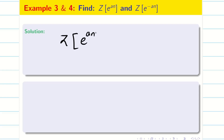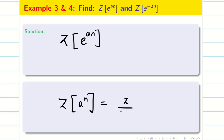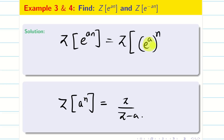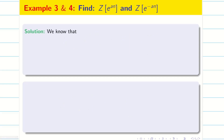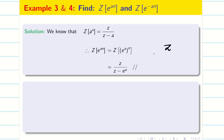Next problem: find Z of e^(an). We know the formula Z of a^n is Z by (Z minus a). Z of e^(an) is nothing but Z of (e^a)^n. Whether it is e^a or simply a or b or 2 or minus 3, it doesn't matter. So Z of e^(an) can be written as Z of (e^a)^n, and the answer is Z divided by (Z minus e^a).